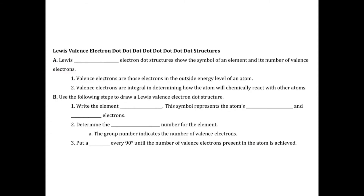Now what we're going to do is learn how to write Lewis valence electron dot structures. Lewis valence electron dot structures show the symbol of an element and its number of valence electrons. Valence electrons are those electrons on the outermost energy level. The first thing you do is write the element's symbol, which represents the atom's core or nucleus and inner electrons.